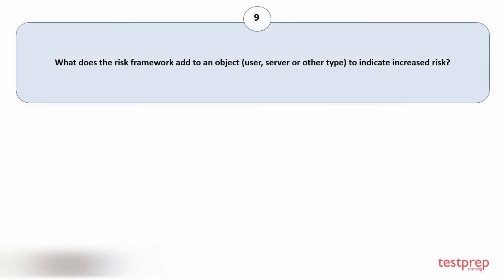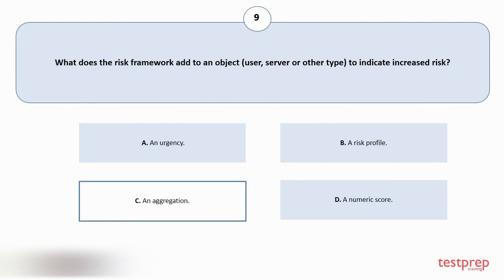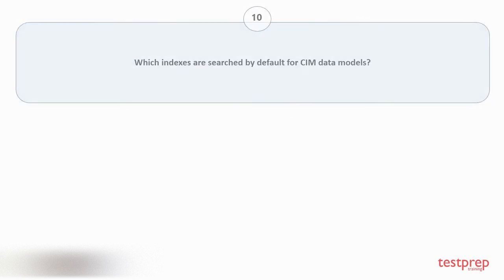Question number nine: what does the risk framework add to an object — user, server, or other type — to indicate increased risk? Options are: A) an urgency, B) a risk profile, C) an aggregation, D) a numeric score. The correct answer is option C.